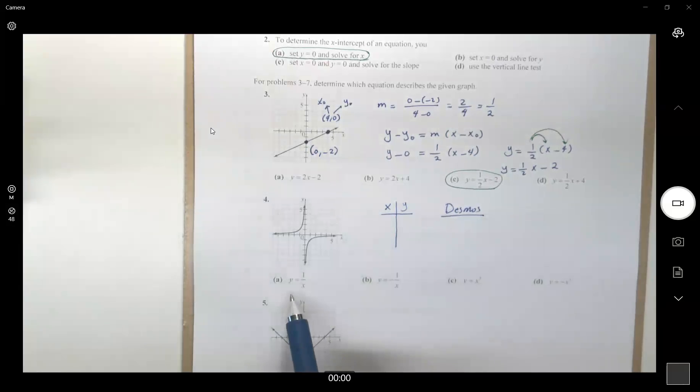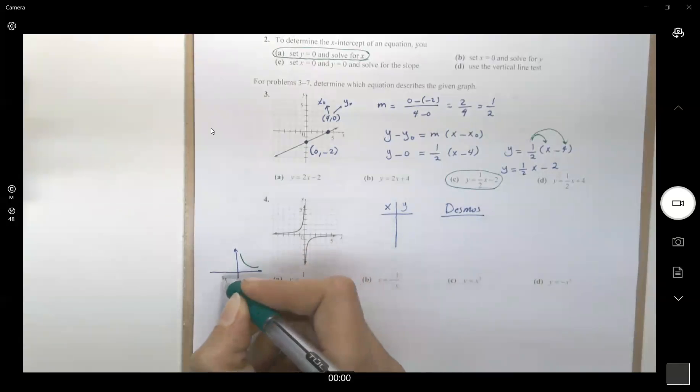For example, if you use desmos to graph 1 over x, the graph is like this. You have the graph located in the first and third quadrant. This is this graph.